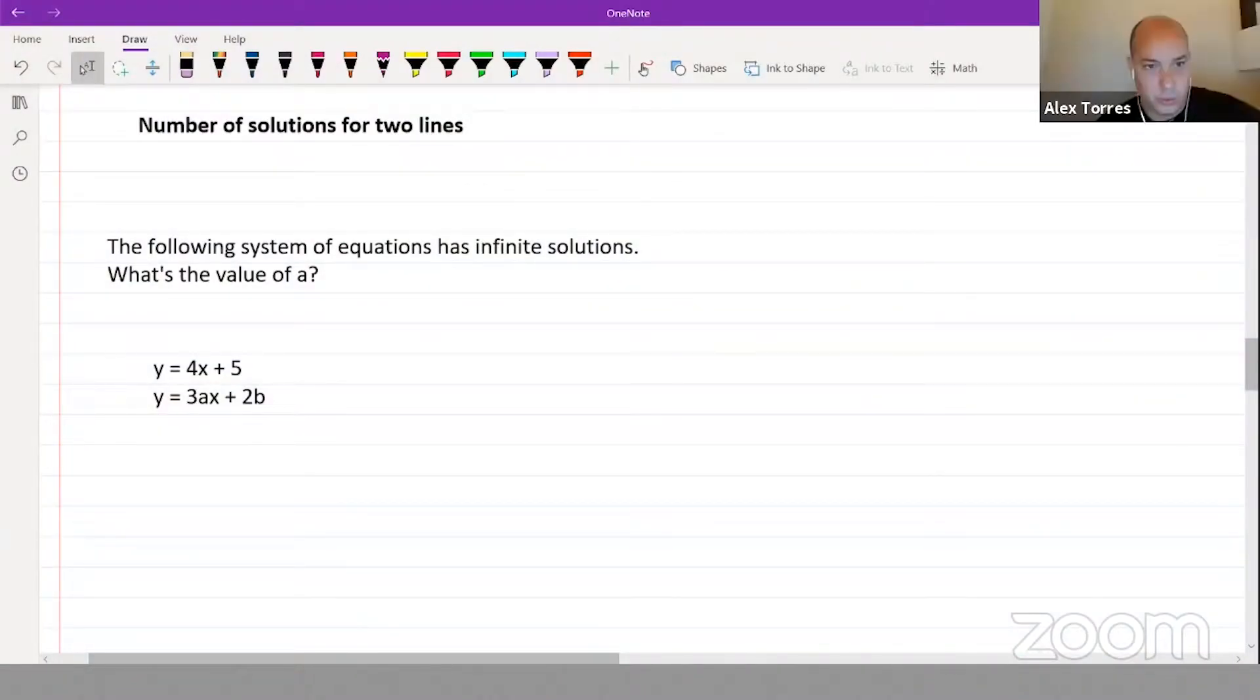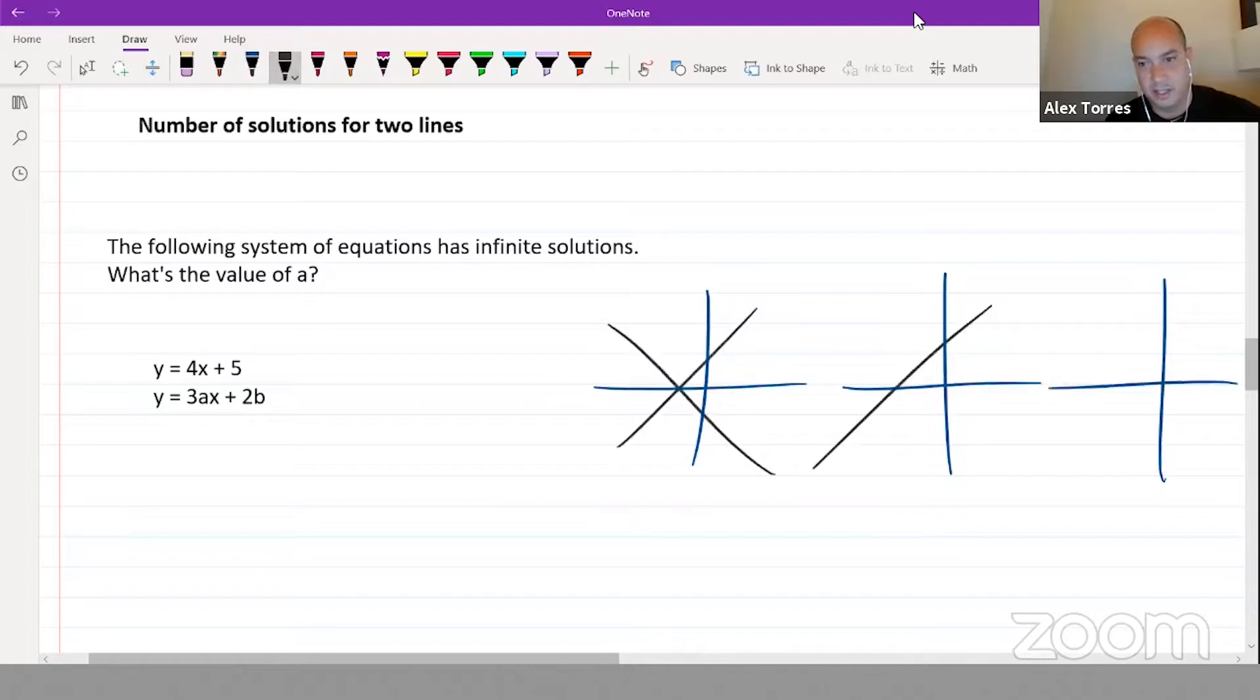Here we've got two lines with infinite solutions. There are three ways that two lines can interact with one another: they can hit each other once, never, or always. If they're actually the same equation as one another, they'll always be in contact. This is the idea of having one solution, zero solutions, and infinite solutions.